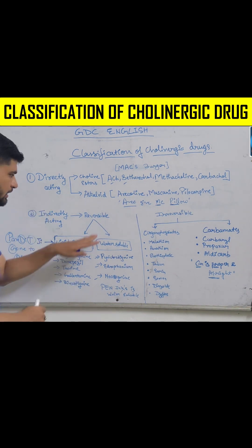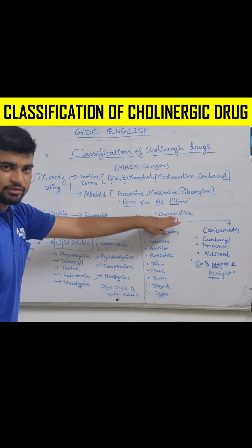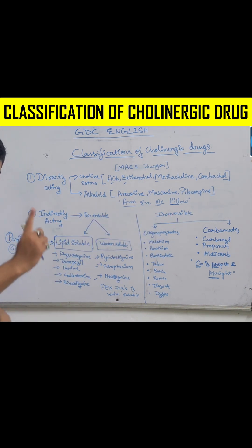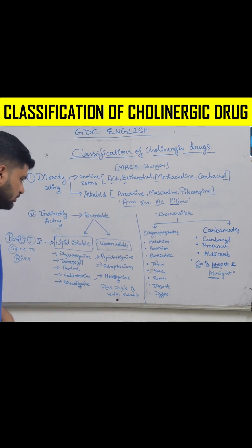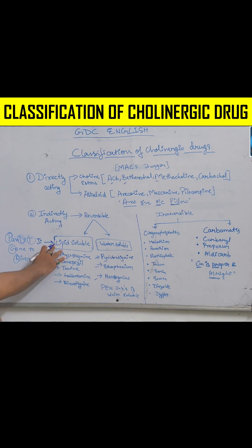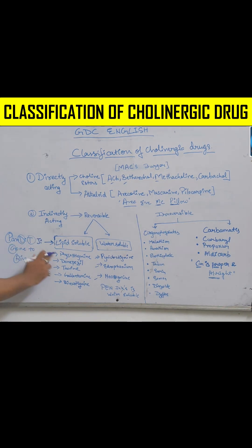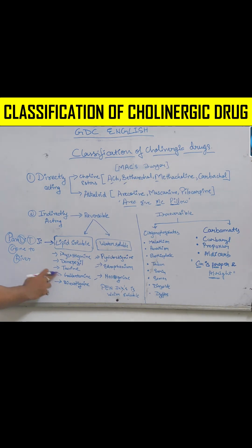Indirectly acting are also two types: reversible and irreversible. Reversible has lipid-soluble and water-soluble. Lipid-soluble can be learned through the mnemonic 'Pandit G Gone to River': PDT — Gone to River — Physostigmine.